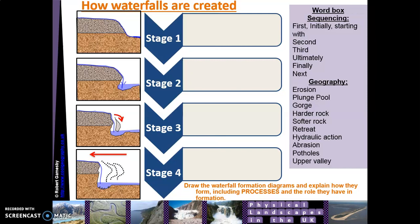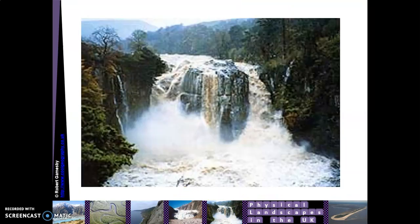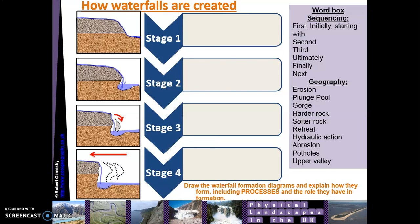When you're asked about the processes of waterfall or gorge formation in geography, you need to explain it in stages — it needs to be logical and sequenced. That's what will get you into Level 2 or even Level 3 on a marked answer. On this paper you won't get questions above six marks, so for a four or six mark answer you might get a series of diagrams or a picture and be asked to explain what's going on. Use sequencing words like 'firstly,' 'secondly,' 'the next thing to happen is,' 'subsequently' — words you'd use in English to progress a story.